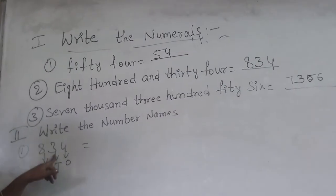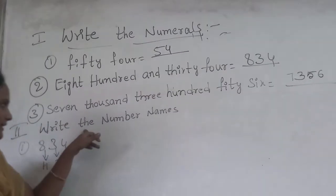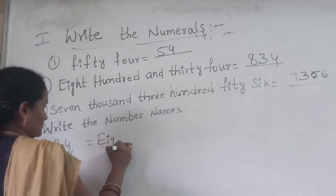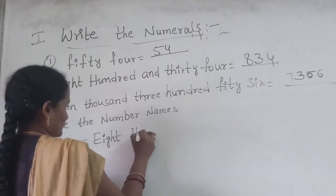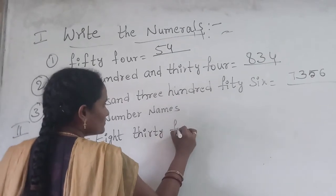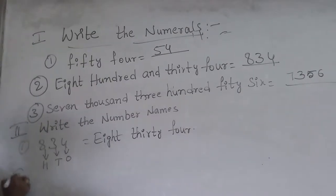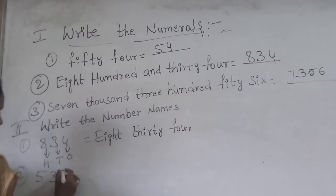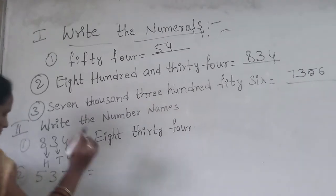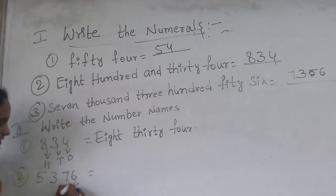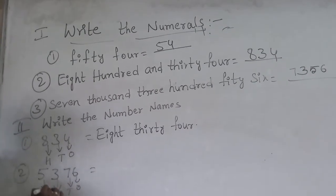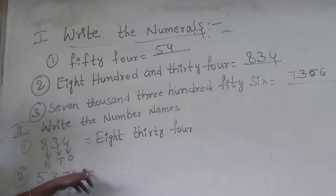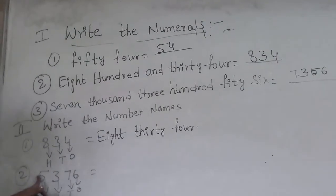1,500. 3,000. Now let's write the number name for 1,500. Next one: 2,300. Next: 2,000. Please read this number before you write. First check the place values: ones, tens, hundreds, and thousands.